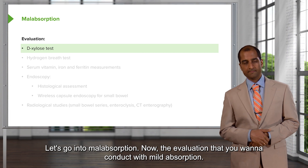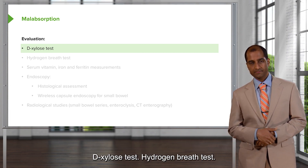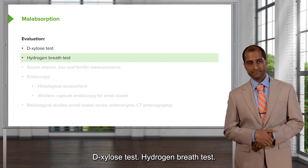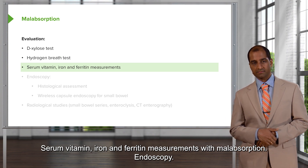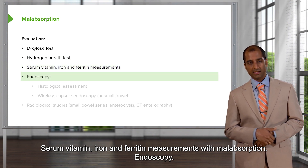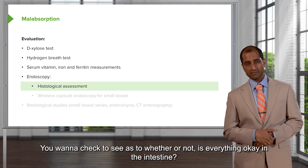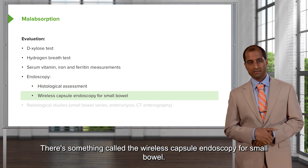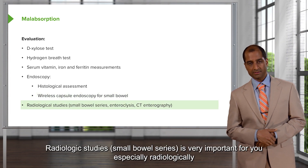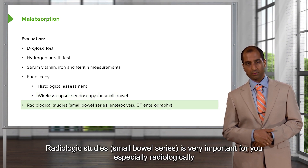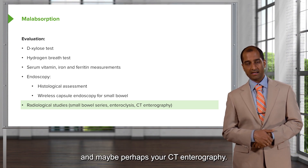Let's go into malabsorption. The evaluation you want to conduct includes the D-xylose test, hydrogen breath test, and certain vitamin, iron, and ferritin measurements. With malabsorption, endoscopy — to check whether everything is okay in the intestine. There's also a wireless capsule endoscopy for the small bowel. Radiologic studies such as small bowel series are very important, as well as CT enterography.